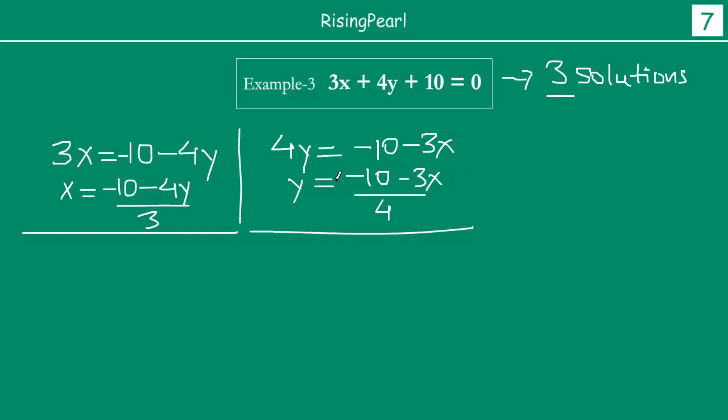So we will go something like this: first value, let x equal to 0. If you take x equal to 0, then y becomes minus 10 minus 3 times 0, whole thing divided by 4. So this becomes minus 10, now 3 times 0 is 0, so minus 10 by 4, which becomes minus 5 by 2. So this means from this we find out that x is 0 and y is minus 5 by 2. This is our first solution.